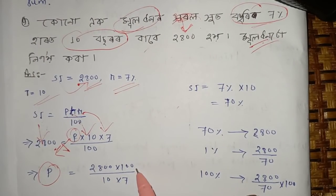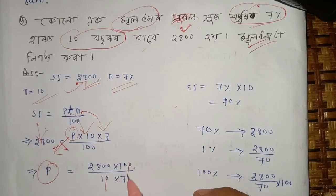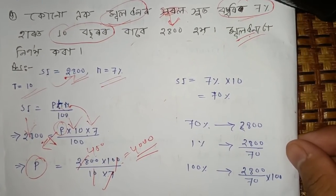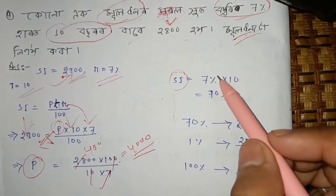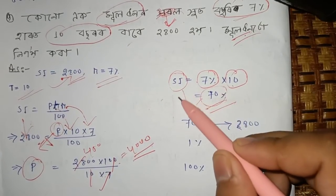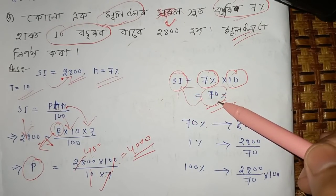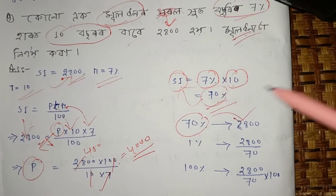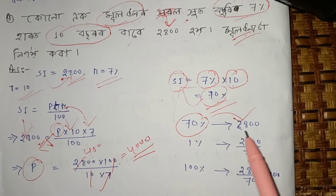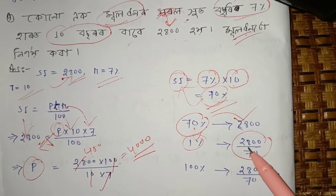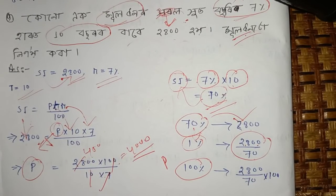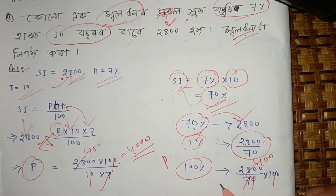P is equal to 2,800 into 100 divided by 10 into 7. Solving this equation gives us 4,000. So the principal is 4,000. Using the shortcut percentage method: 7% into 10 years equals 70%. Simple interest is 70%, and simple interest amount is 2,800. So 70% equals 2,800. Then 1% is 2,800 divided by 70, and 100% — which is the principal — is 4,000.